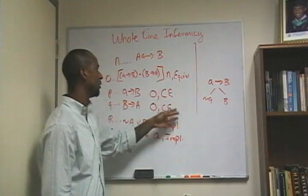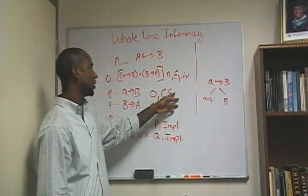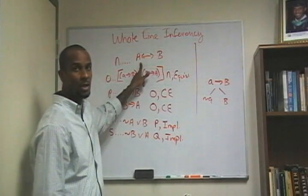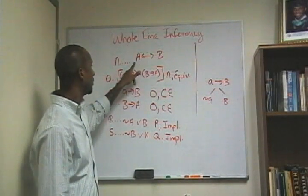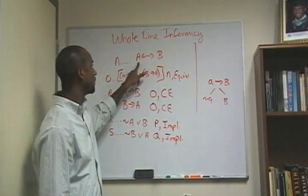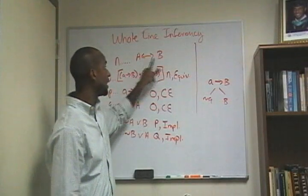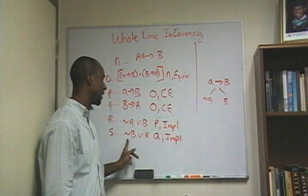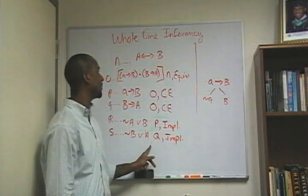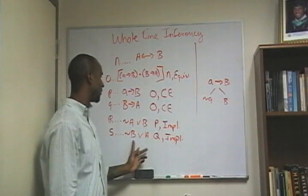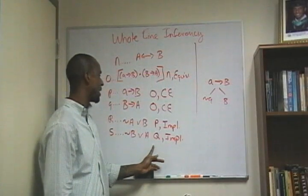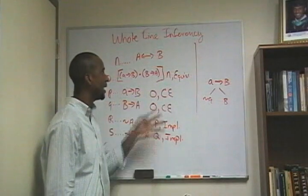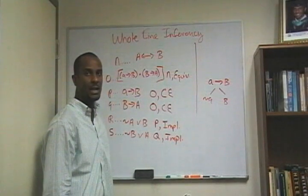We've applied equivalence, conjunction elimination, and material implication just to this one biconditional. So we've gone from line N having A if and only if B, to being able to derive not B or A. The question is: how do I get to not B or A from just this line? I go through these different steps and arrive at that conclusion.